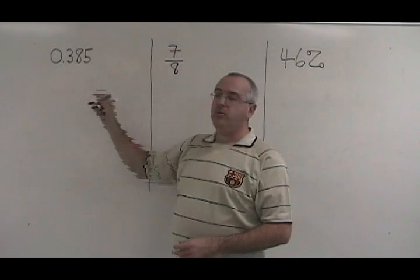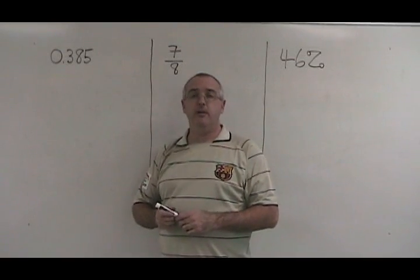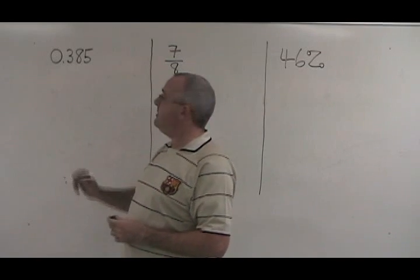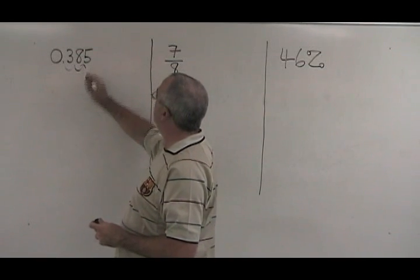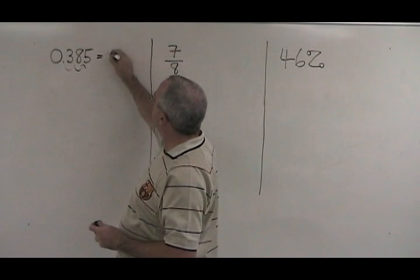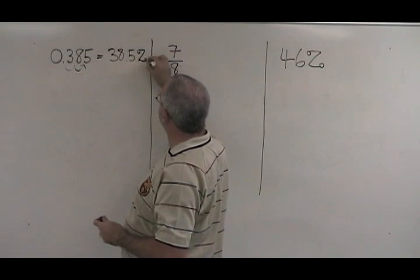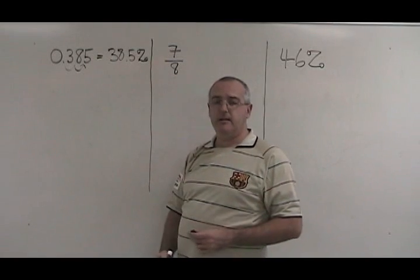Here we have 0.385. To convert it to a percent, we simply move the decimal place two spaces to the right, and it becomes 38.5 percent. Don't forget to write the percent sign.